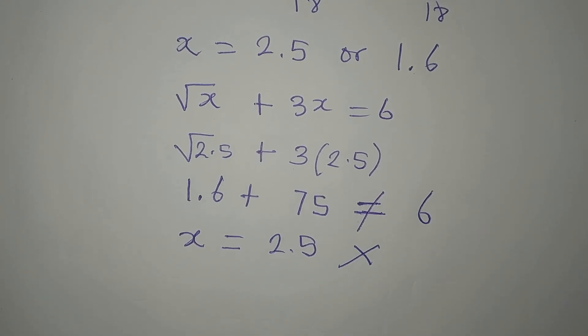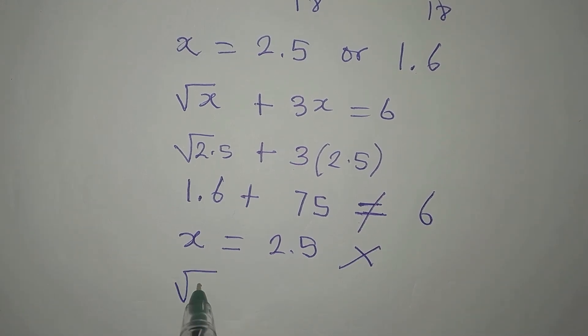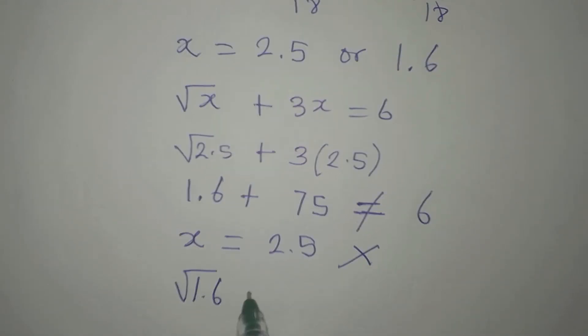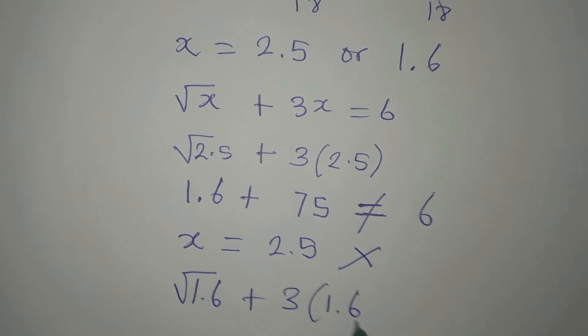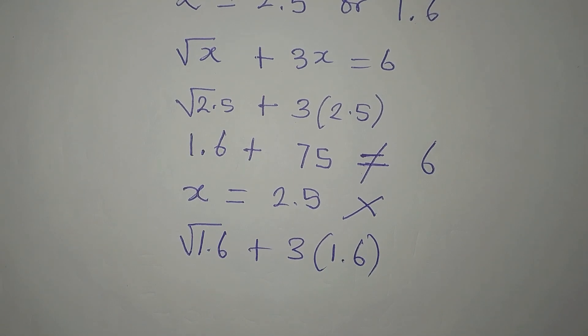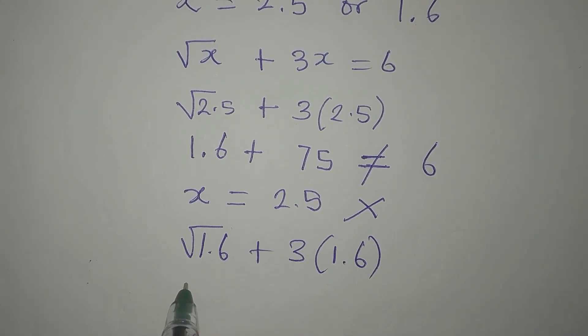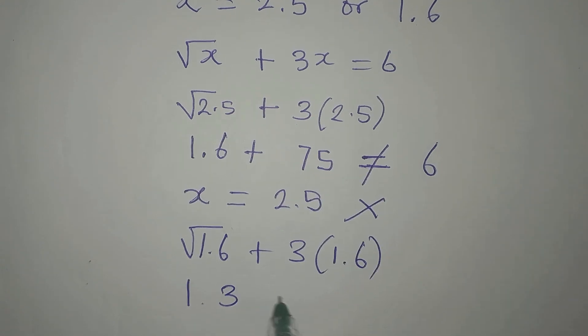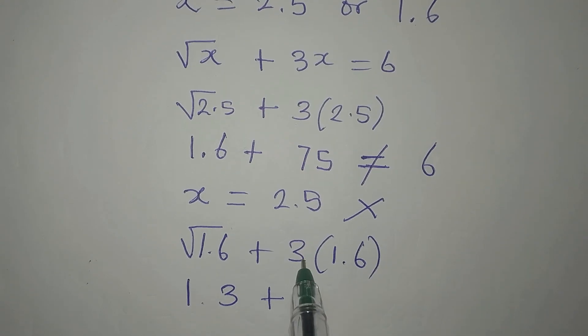Now, let's work with the second value, which is 1.6. Now, we have square root of 1.6 plus 3 times 1.6. Now, square root of 1.6 is approximately 1.3 plus 3 times 6 is 18.